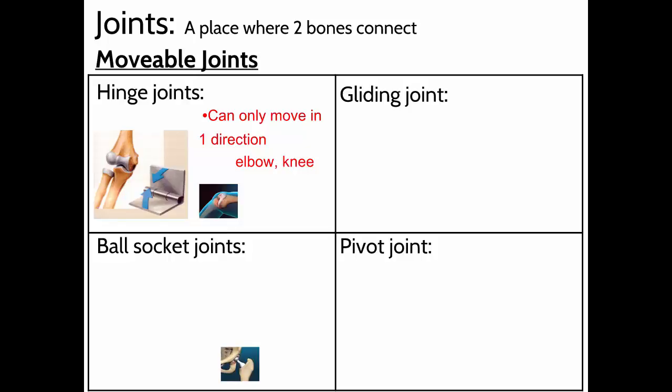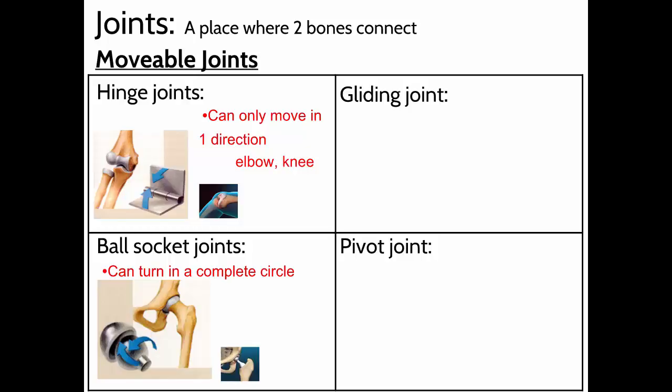A ball-and-socket joint is just like it sounds — it can move in a complete circle. The top of the femur has a round ball at the end that fits into a cup-shaped socket, allowing a much wider range of movement — almost 360 degrees. Your hip joint and your shoulder joint are ball-and-socket joints, giving you a lot of range of motion.